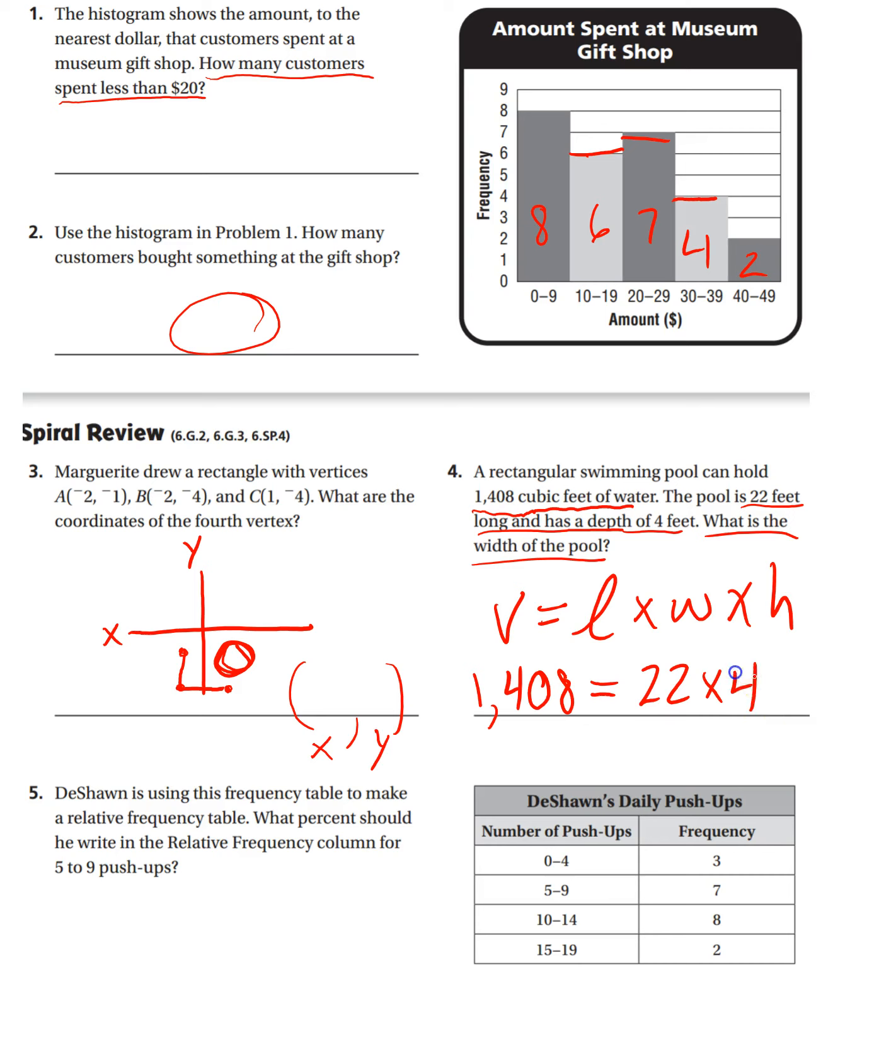But we don't know the width. Well, 22 times 4 is 88, so we have 88W equals 1,408. Now, we just divide both sides by 88 to figure out what W equals. So, I'm going to let you do that math.